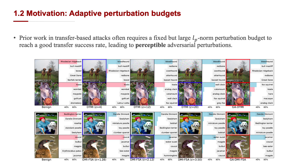Despite a large amount of work on transfer-based attacks, many fundamental questions remain unresolved. For example, existing transfer-based attacks that search for adversarial examples in a fixed radius norm ball often require a high perturbation budget to reach a good transfer success rate. However, such perturbations might be perceptible to humans.